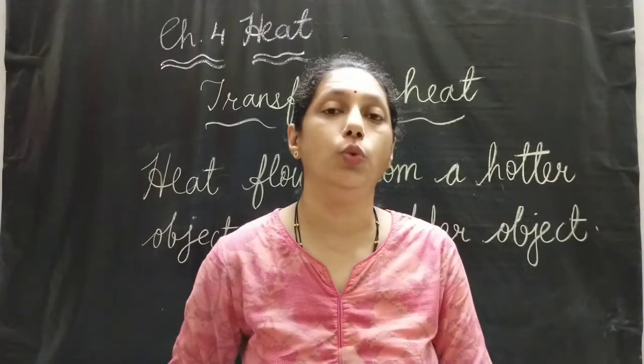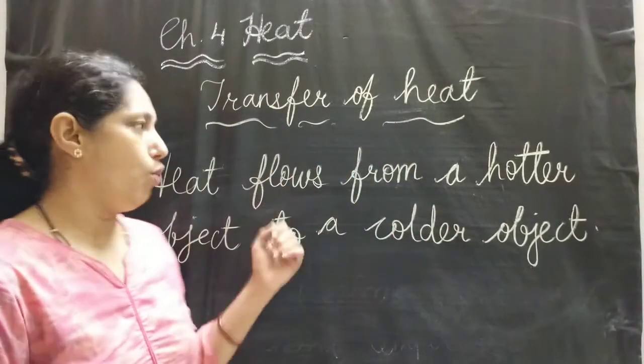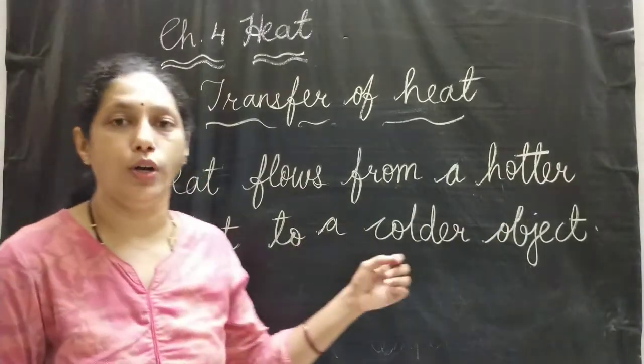When we keep a frying pan on a flame, it becomes hot. And when we remove it from the flame, it cools down. Why is this so? It is because the heat of the flame is transferring to the utensil. When we remove it from the fire, the heat is transferred from the frying pan to the surroundings. In both cases, the heat is transferred from the hotter object to the colder one.